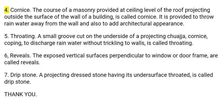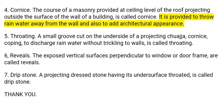4. Cornice. The course of masonry provided at ceiling level of the roof, projecting outside the surface of the wall of a building, is called cornice. It is provided to throw rain water away from the wall and also to add architectural appearance.